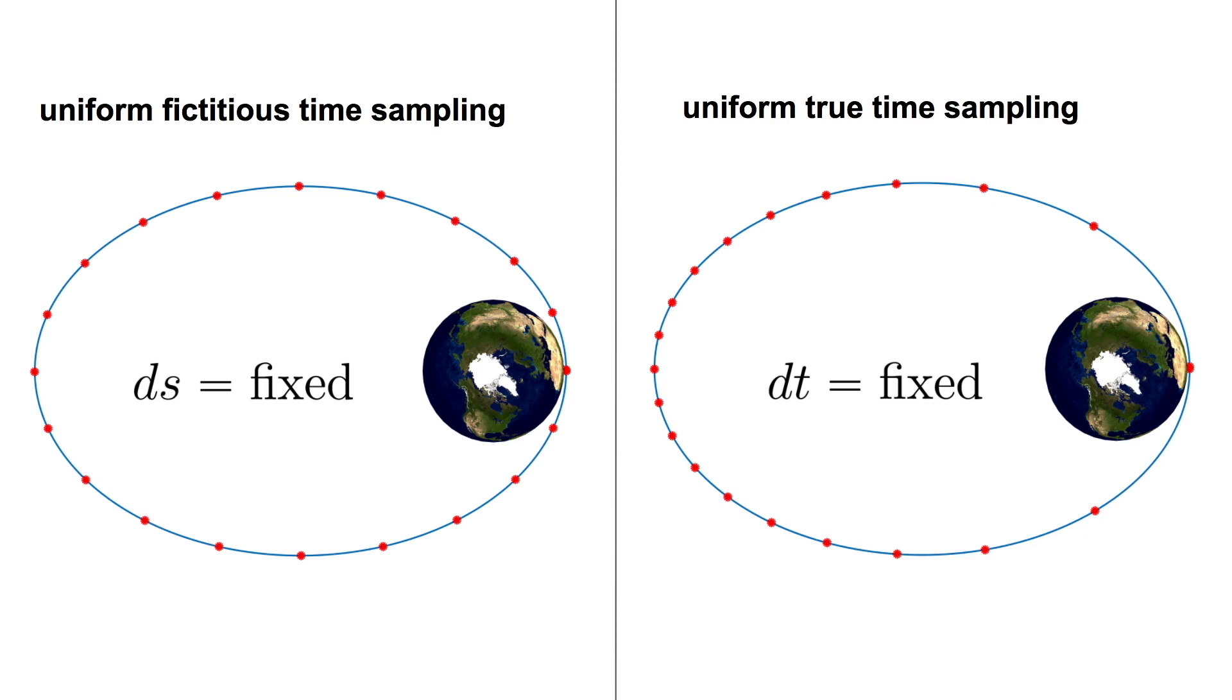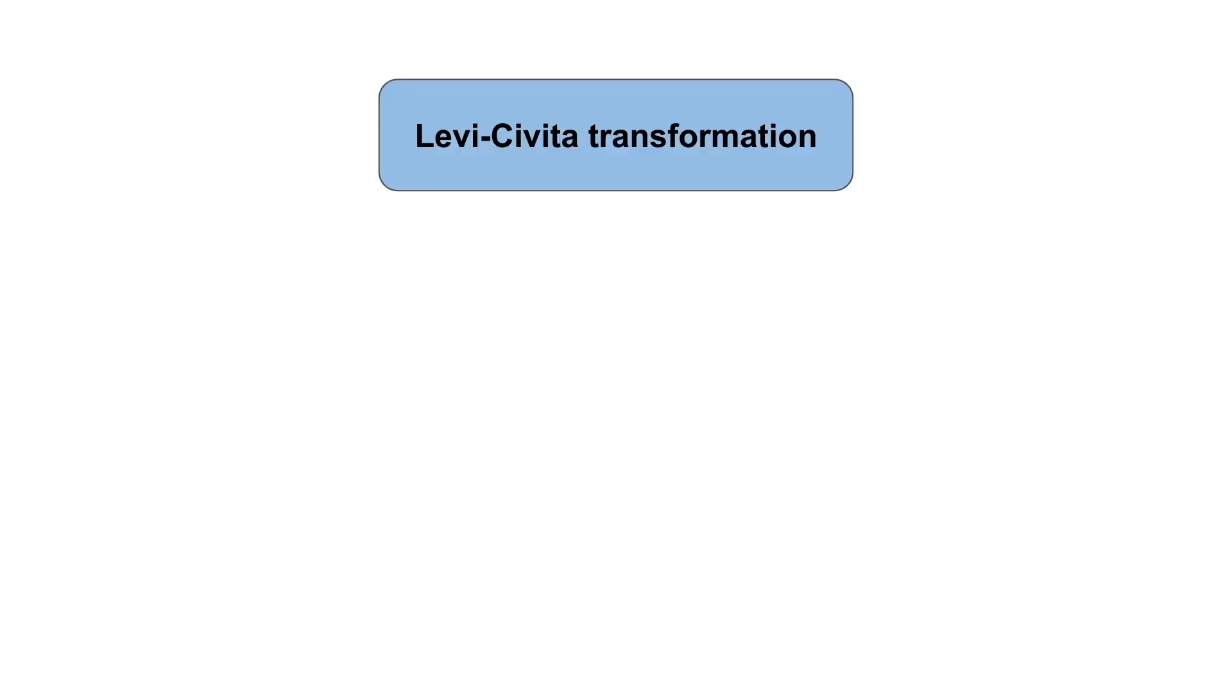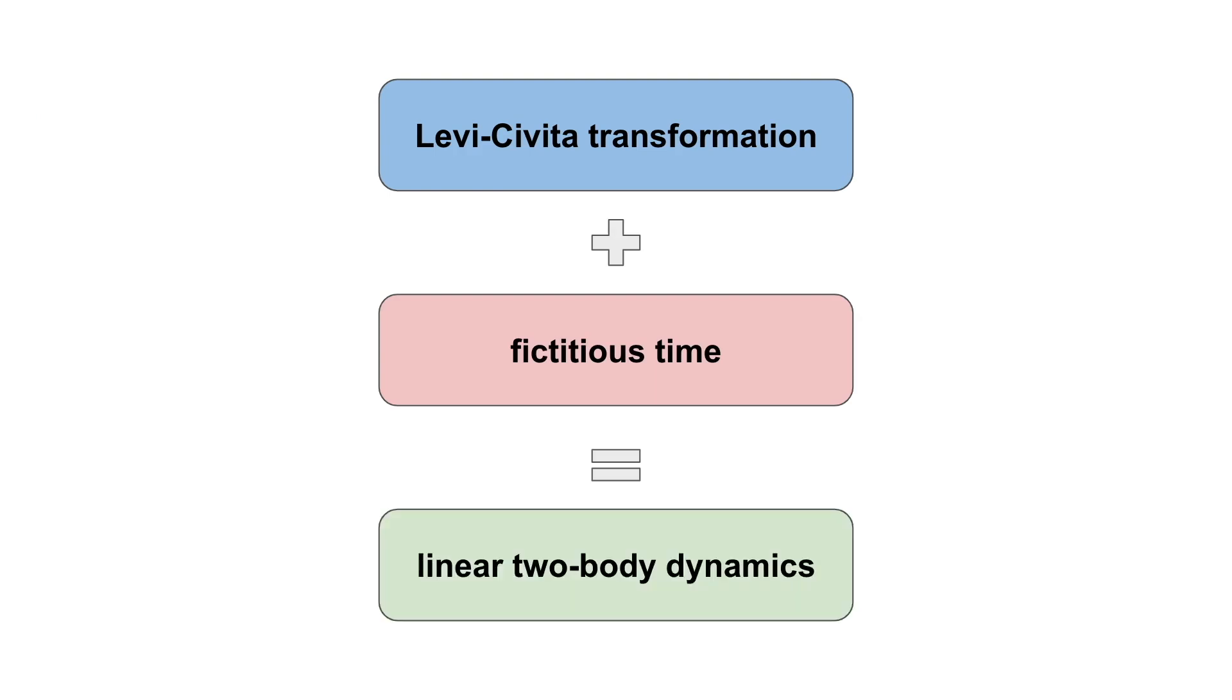The geometric result of this effect can be observed when comparing an elliptical orbit sampled uniformly in fictitious time and again sampled uniformly in true time. The resulting samples in the uniform fictitious time case are equally spaced in both arc length and eccentric anomaly. This results in even samples throughout the orbit, regardless of eccentricity. For the uniformly sampled true time case, since the spacecraft is moving faster at perigee than apogee, the samples are sparse around perigee and dense around apogee. This behavior makes it a significantly worse candidate for fixed step integration than the fictitious time example.